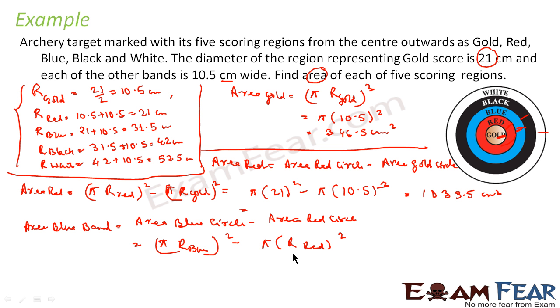Put the values in, you get the answer. That is, π r_blue will be what? 31.5, 31.5 square minus, r_red will be 21, π 21 square.